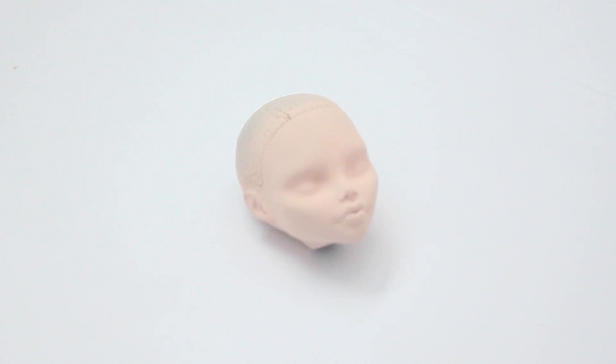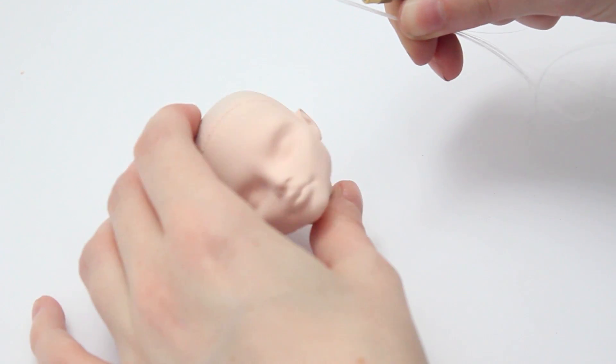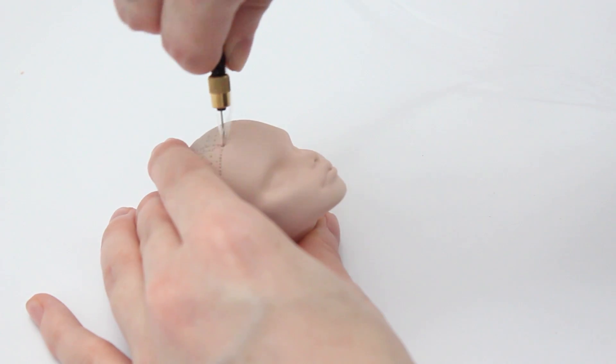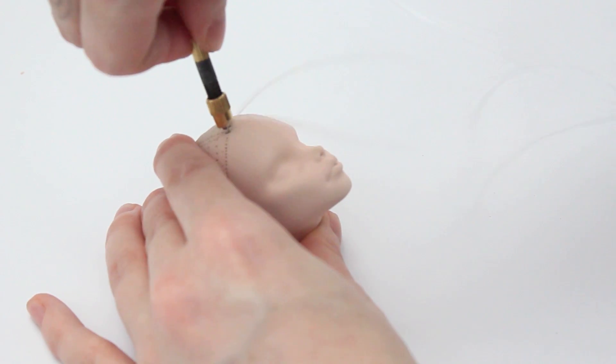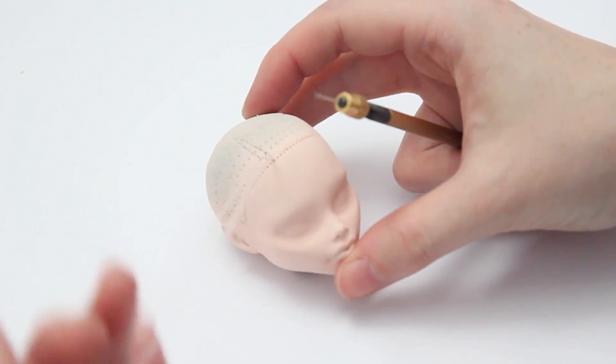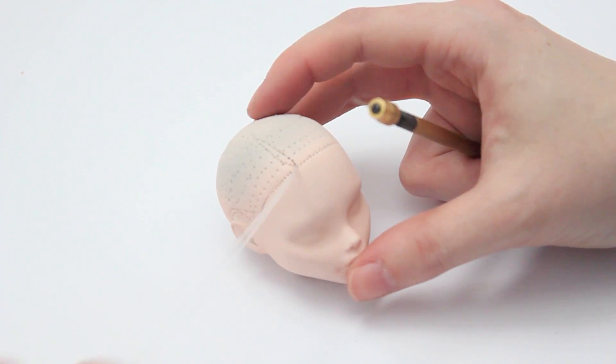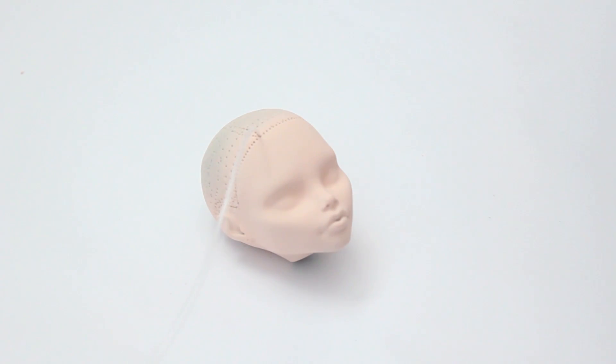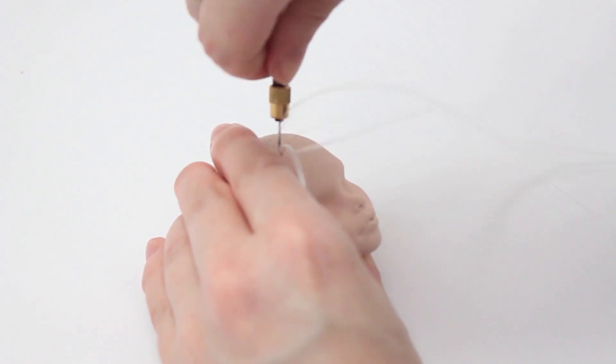Then I'm taking a tiny strand of hair, hook it with the needle, and pluck the hair gently into the head. Yay! One strand is done. Now it's just about a million more to go.